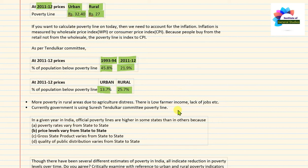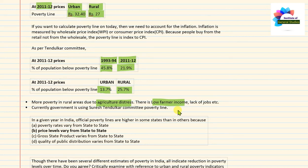There is more poverty in rural areas due to agriculture distress, low farmer income, and lack of jobs. This is why boosting the agriculture sector is important for poverty alleviation. Currently, the government is using the Suresh Tendulkar Committee poverty line, and therefore the Tendulkar Committee recommendation is very important from an exam point of view.